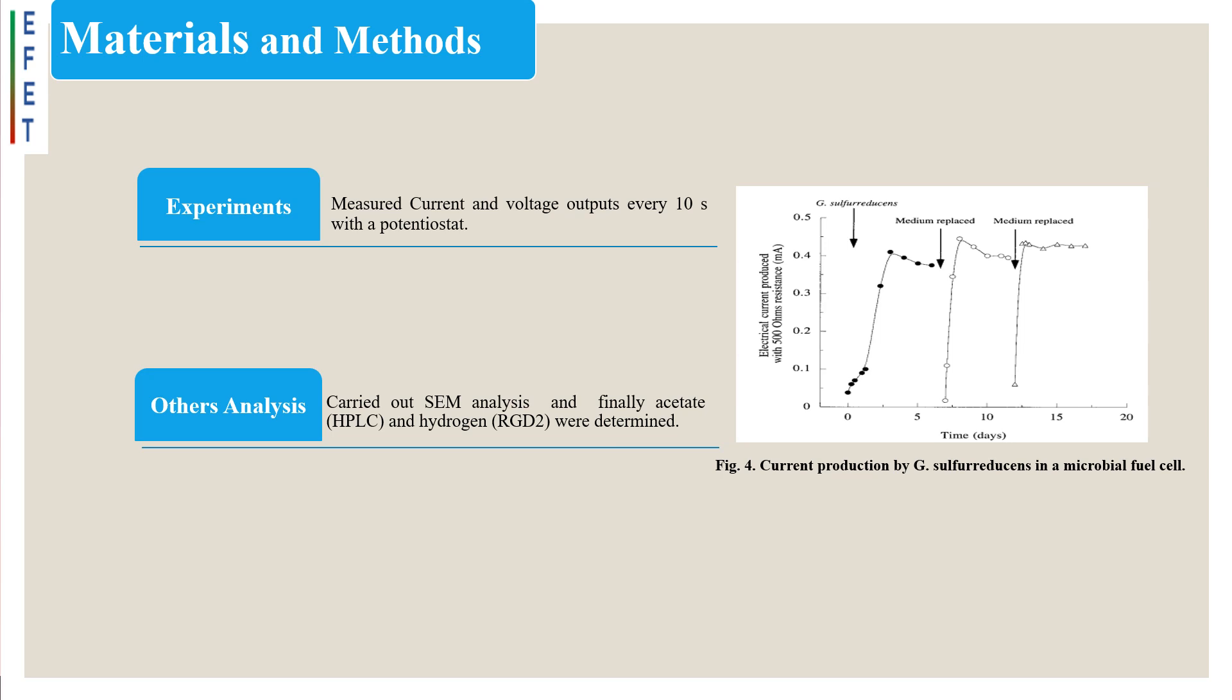The resistance between electrodes was lowered stepwise, pausing at each resistance setting for 5 minutes. For other analysis, electrodes were removed from microbial fuel cell chambers for analysis. The machine operated at 15 kV and scanning electron microscopy images were captured digitally. Acetate was determined via high-pressure liquid chromatography with a fast acid analysis column operated with 0.002 normal sulfuric acid as the eluent and UV detection, and for hydrogen analysis, reduction gas analyzer RGD2 was used.